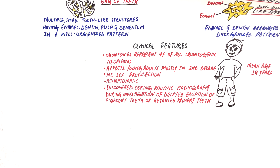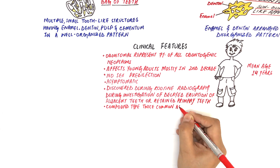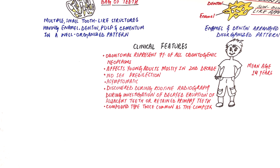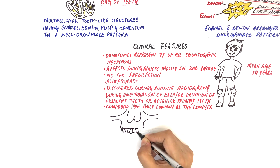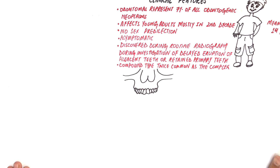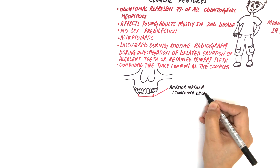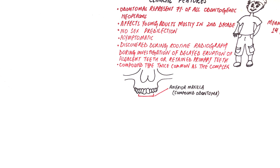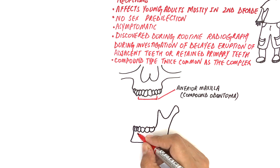Once the tooth structures in an odontoma reach maturity, the lesion does not grow further in size, but the lesion does persist if left untreated. The compound type is twice as common as the complex type. Although the lesion can develop in any area of the jaws, the compound type occurs most often in the anterior maxilla in the incisor and canine region, and the complex type most often develops in the posterior region of either jaw in the premolar and molar regions.